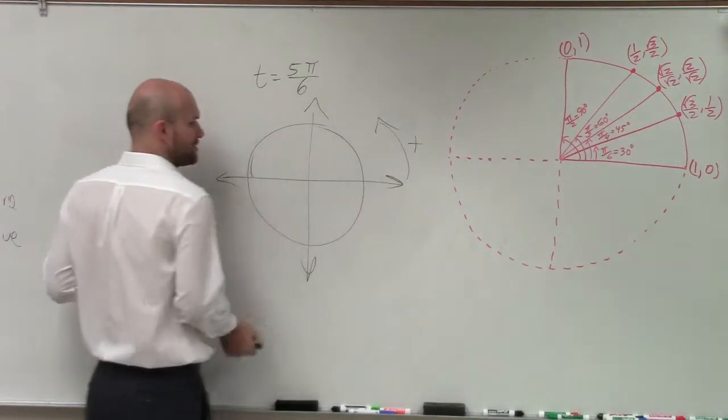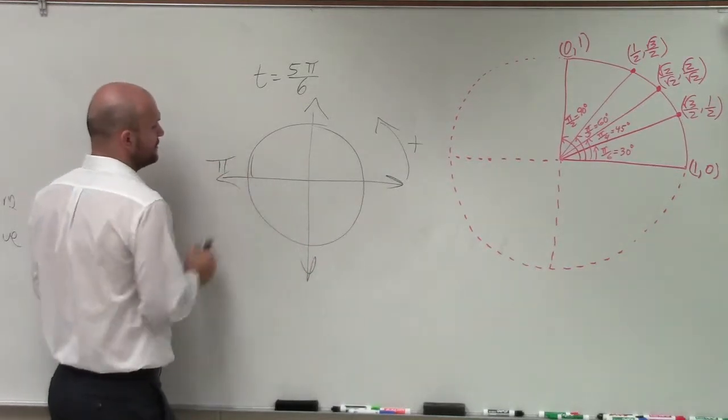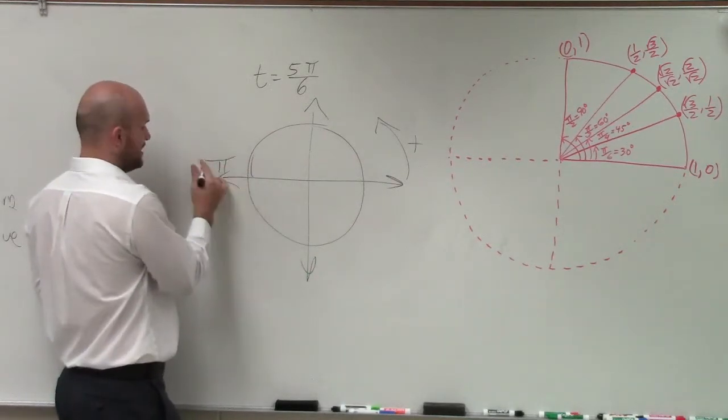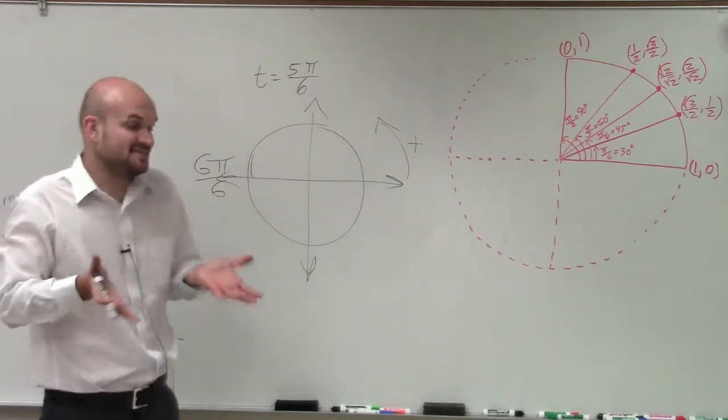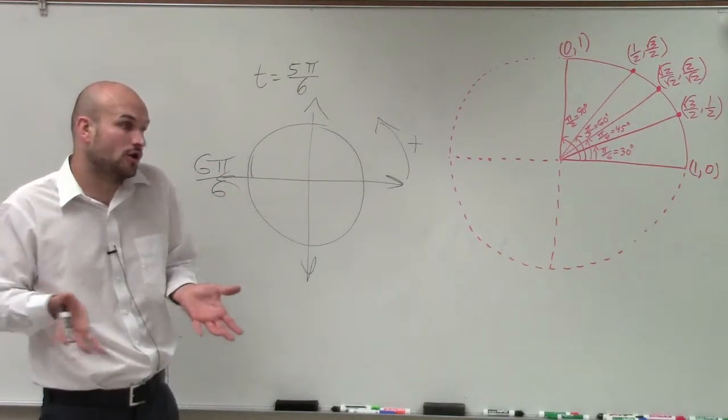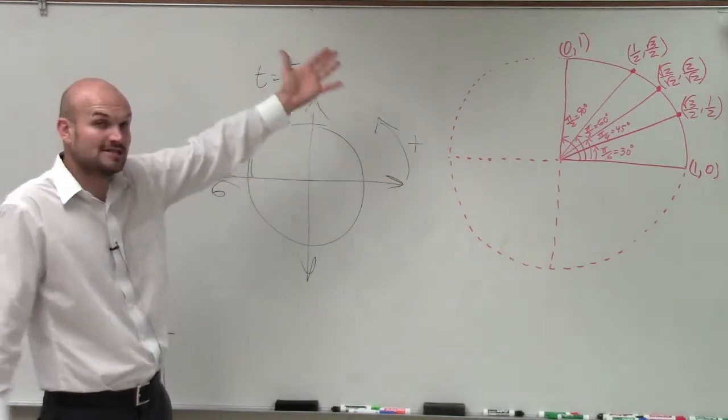So my angle's positive. That means I'm going to go counterclockwise. We know halfway around a circle is pi, and that's a whole pi, right? 6 parts over 6. If you have 6 parts of a whole broken into 6, then you know that's a whole.